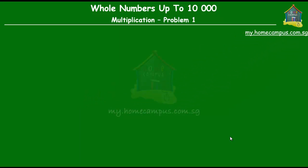Hello and welcome to my.homecampus.com.sg. In this lesson we learn how to multiply numbers. The question given to us is: find the product of 231 and 3. The word 'product' means times or multiply, so the product of 231 and 3 means to multiply 231 by 3.